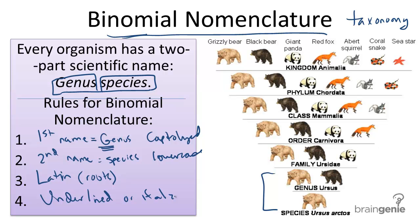Let's give an example. Over to the right, we have the name of the grizzly bear. It has its genus name Ursus and its species name Arctos. So Ursus arctos is going to be its full name — capitalized and lowercase.